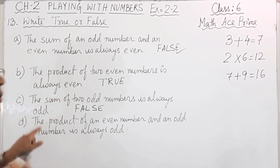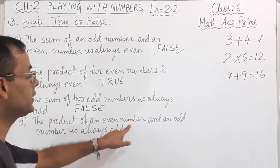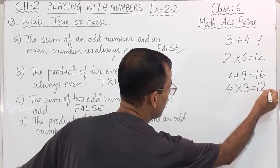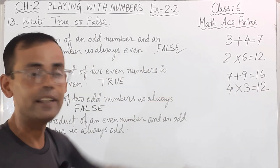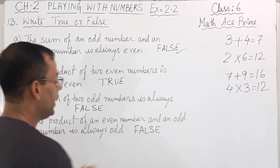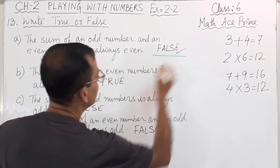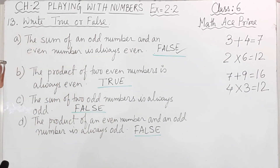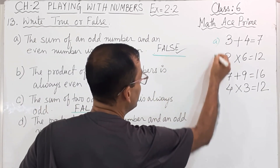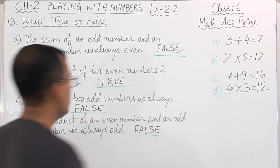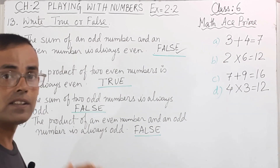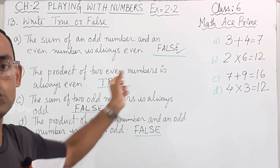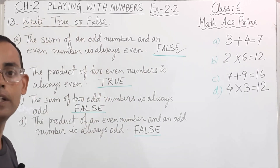The product of an even number and an odd number — take 4 and 3. 4 times 3 equals 12. The statement says it is always odd, but 12 is even. So this is also false. So the answers are: A is false, B is true, C is false, and D is false. You must do the rough work, understand the concept, and then write true or false — don't guess.